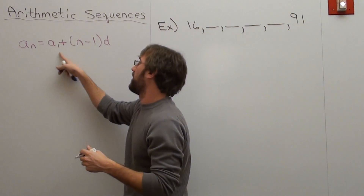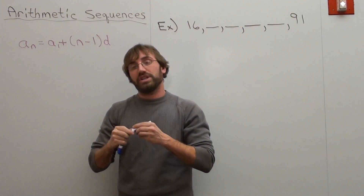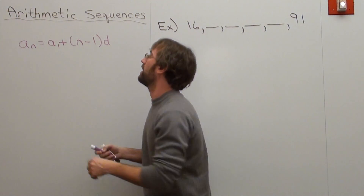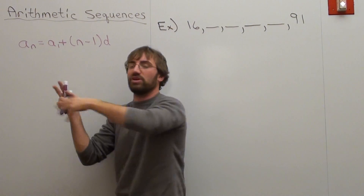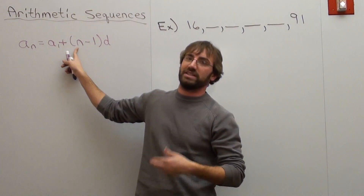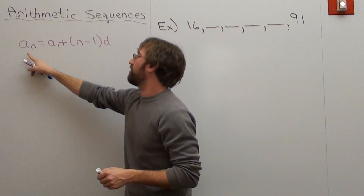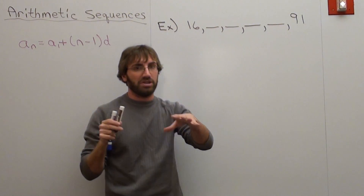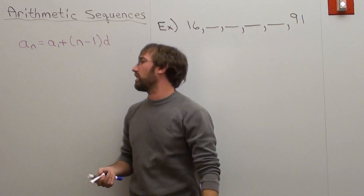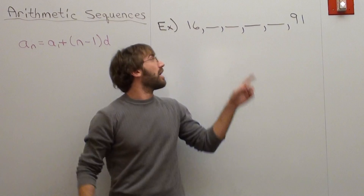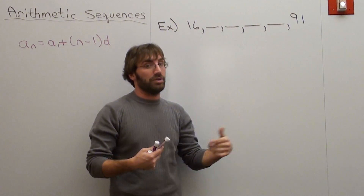I want to use the formula: a sub n equals a sub 1 plus (n minus 1) times d. You are going to put in something for a sub n, because if you're trying to figure out your common difference d, every other variable has to be filled in. You can't leave n as n. So for a sub n, let's put in something we know. We know a sub 6. Some students ask why not put in a sub 1 — because we need a sub 1 in the other part of the formula.